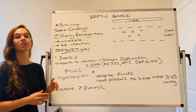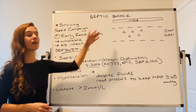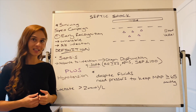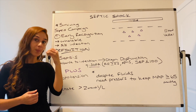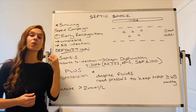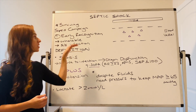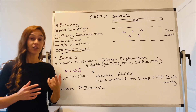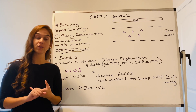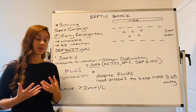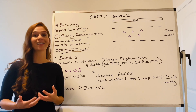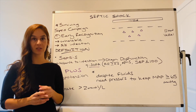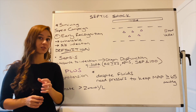Early recognition is always step one. We don't want our patients to get to septic shock — we want to always identify things in their early stages. So always consider your vulnerable populations that could be at higher risk for sepsis and septic shock: the very young, the very old, the immunocompromised. What about patients with chronic illnesses? All those individuals are at higher risk for sepsis leading to septic shock.